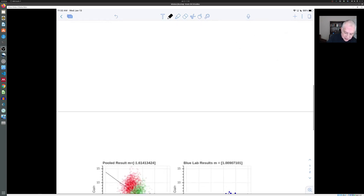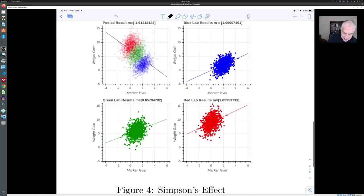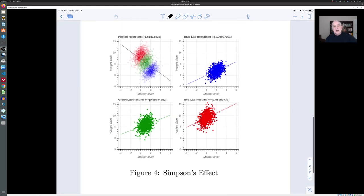Imagine that we have three laboratories out there in the world that are doing an experiment. They're looking at some biomarker in a population and measuring the amount of weight that a person varies, and they're trying to do a linear regression to see whether an increase in the amount of the marker causes a gain in weight.